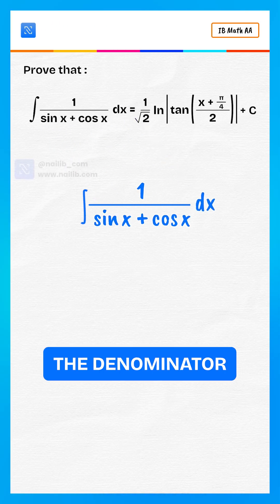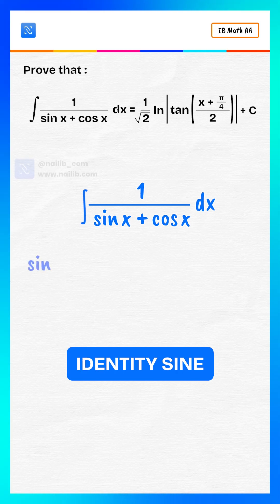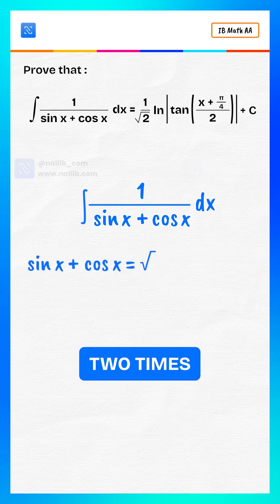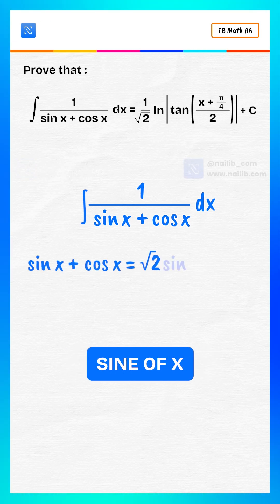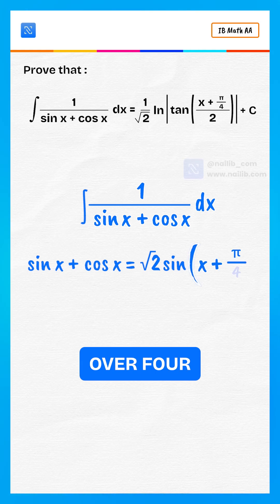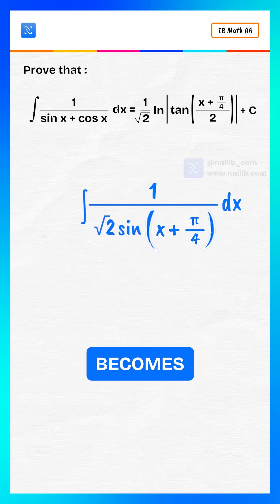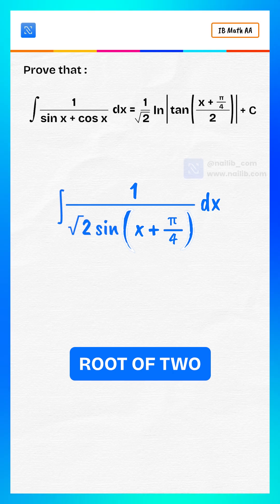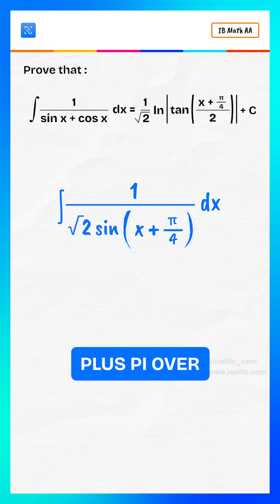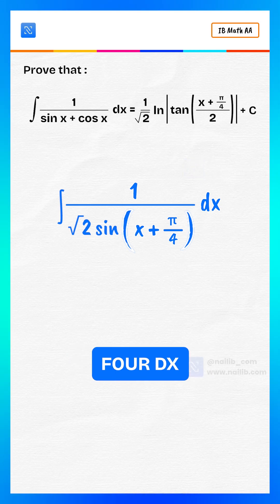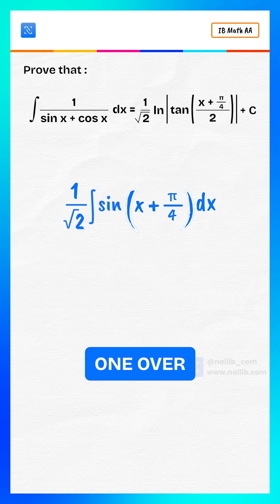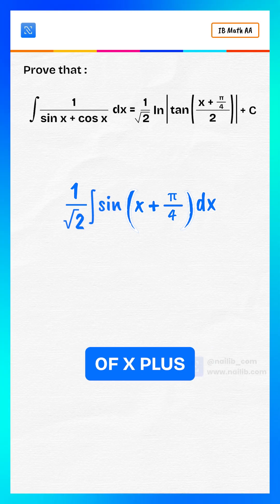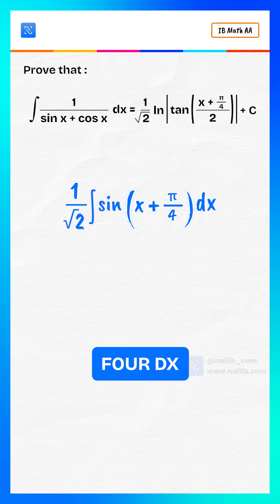Let's simplify the denominator using the identity: sine x plus cosine x equals the square root of 2 times sine of x plus pi over 4. So the integral becomes the integral of 1 over the square root of 2 times sine of x plus pi over 4 dx, which equals 1 over the square root of 2 times the integral of 1 over sine of x plus pi over 4 dx.